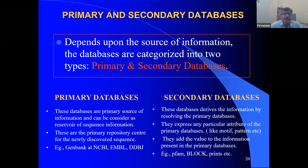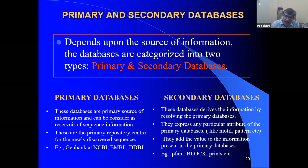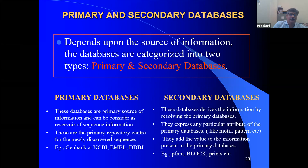In bioinformatics, databases are classified as primary and secondary. Primary databases — like GenBank — are the raw information deposited directly from a scientist's desk to a computer. These are the primary source of information and can be considered a reservoir of sequence information. A scientist sequences bacteria, gets the sequence, and deposits it into the NCBI server using interfaces like Sequin or Webin. EMBL, DDBJ, and NCBI are all examples of primary databases.